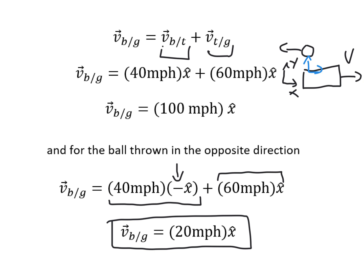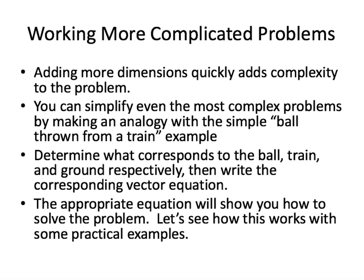It's really important to understand how we measure things relative to different coordinate systems. Next, I want to look at a problem where things are going at different angles. In the previous example, everything was moving in one dimension, but allowing motion in two or three dimensions adds complexity. The secret is you can take even the most complicated problem and make an analogy with the simple ball-thrown-from-a-train example, then use that analogy to set up the problem so it's easy to solve.